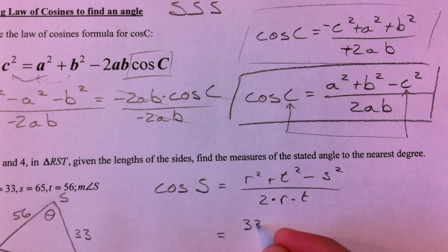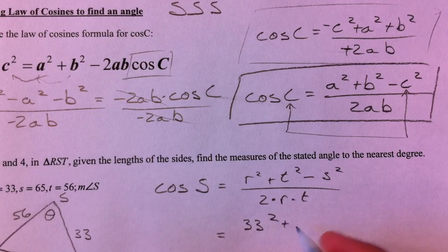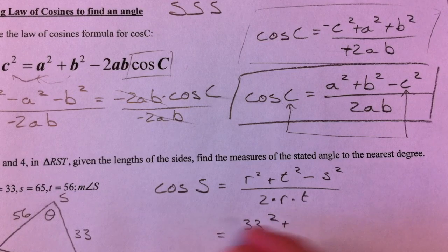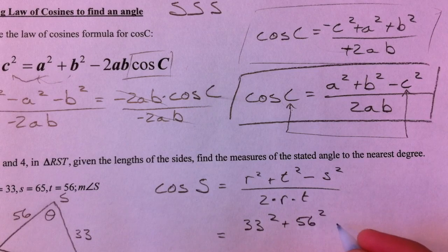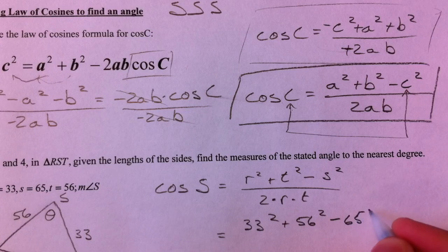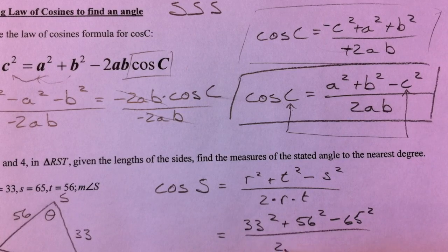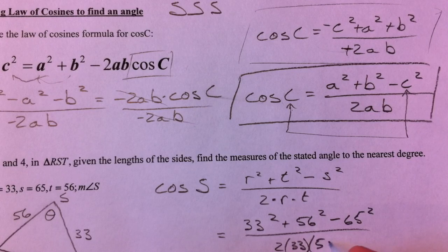So cosine of S equals r² plus t² minus s² over 2 times r times t. 33² plus 56² minus 65² all over 2 times 33 times 56.